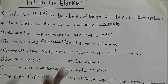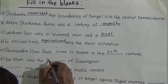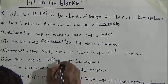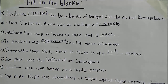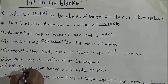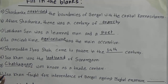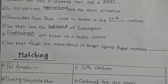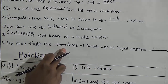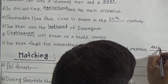F: Isha Khan was the blank of Sonargaon. Answer: Isha Khan was the landlord of Sonargaon — L-A-N-D-L-O-R-D. G: Blank was well known as a trade center. Answer: Chattagram — C-H-A-T-T-A-G-R-A-M. Chattagram was well known as a trade center. H: Isha Khan fought for independence of Bengal against Mughal emperor blank. Answer: Isha Khan fought for independence of Bengal against Mughal emperor Akbar — A-K-B-A-R.